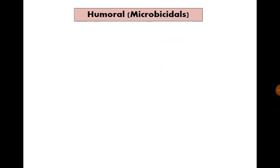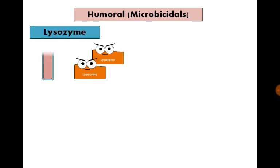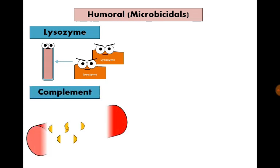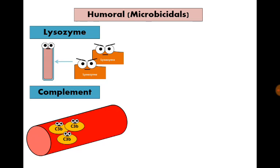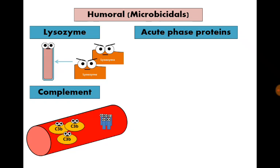Let's talk about the humoral or microbicidal factors in blood. We have four non-specific microbicidals present in our blood. First, lysozyme, which acts against peptidoglycan present in the bacterial wall. Second, complement proteins, which are a family acting together in a sequential manner to destroy organisms. They can act as part of innate immunity or acquired immunity depending on the triggering factor.